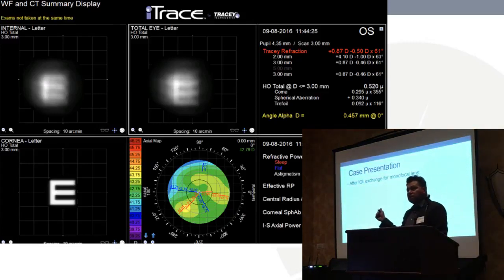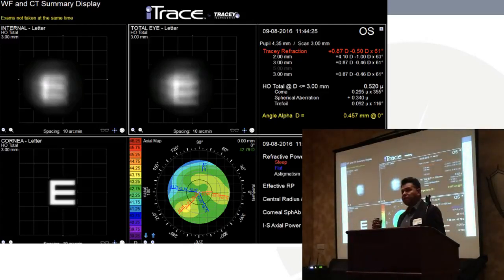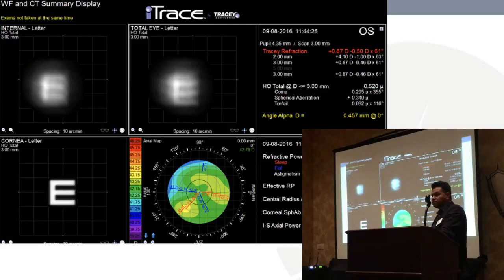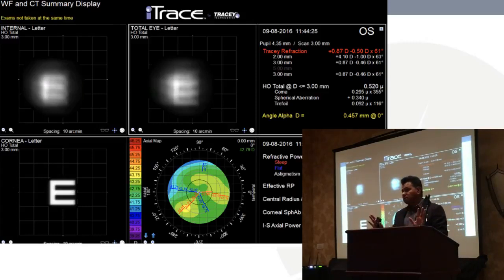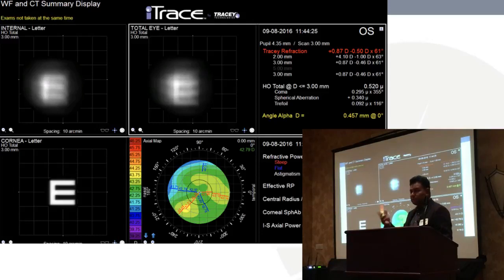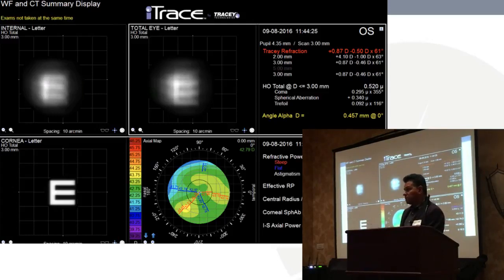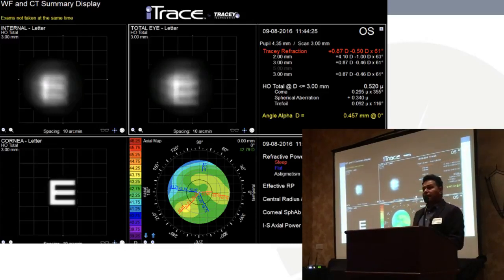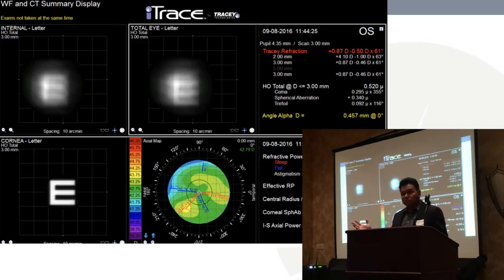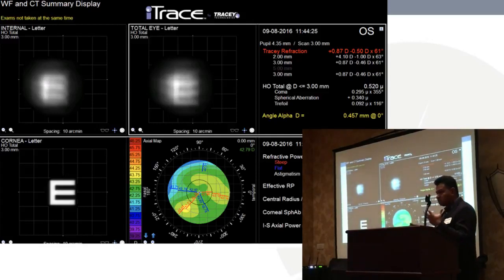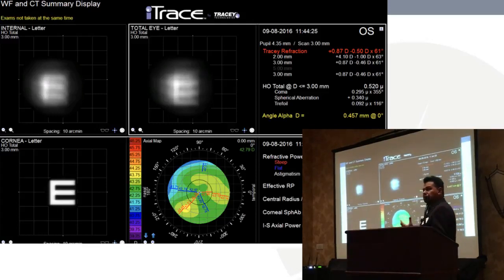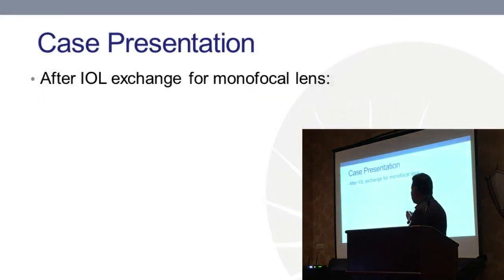We considered whether this could be caused by posterior capsule opacification alone. The consensus was probably not — she had 20/40 vision, so it wasn't a dense PCO, and you wouldn't expect a mild PCO to cause this degree of aberration. It would be interesting to take iTrace measurements pre- and post-YAG to study that. Given the patient complained from day one and the lens was well-centered with no tilt, I concluded this irregularity was probably not from capsule opacification, and we proceeded with an IOL exchange.